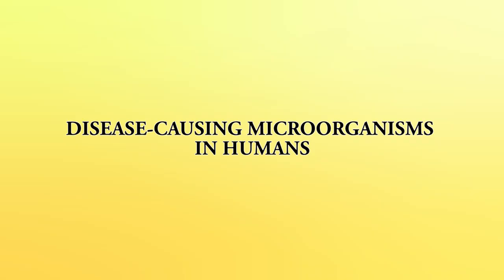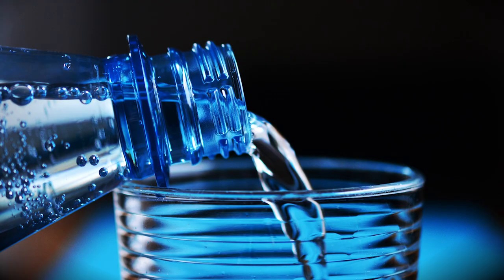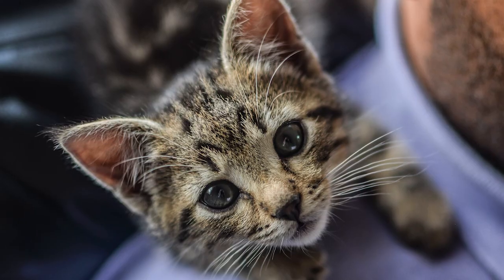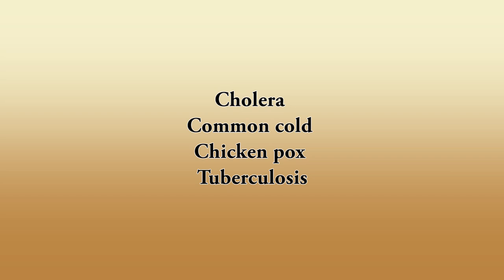Pathogens — that is, microorganisms — enter our body through the air we breathe, the water we drink, or the food we eat. They can also be transmitted by direct contact with an infected person or carried through an animal. Diseases that can spread from an infected person to a healthy person through air, water, food, or physical contact are called communicable diseases. Examples include cholera, common cold, chickenpox, and tuberculosis.